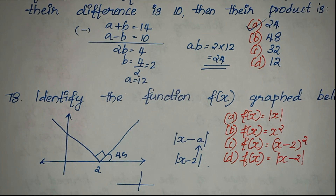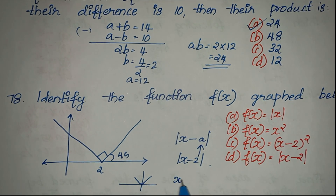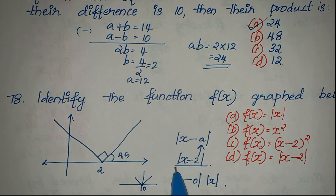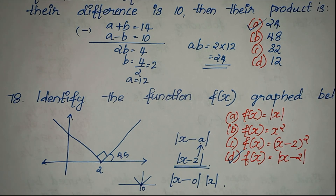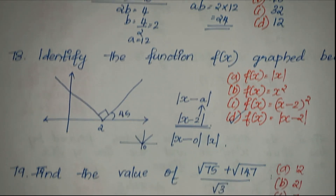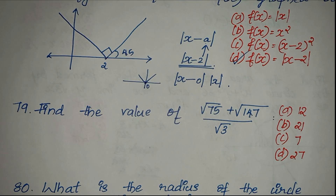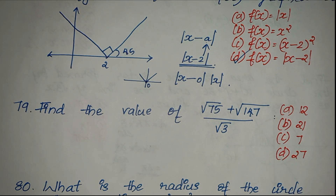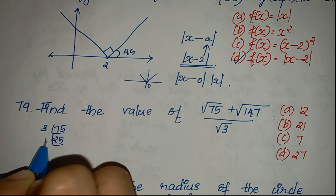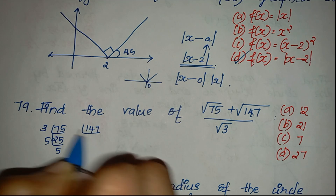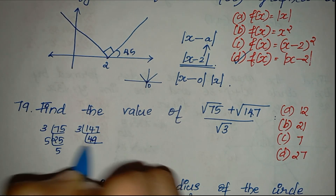The graph shows modulus of x minus a equals 0. In this question, a represents 2, so the function is the modulus of x minus 2. The vertex of the V shape is shifted to x equals 2. This is the shortcut: the sharp end of the V shape tells us the value of a, which equals 2.